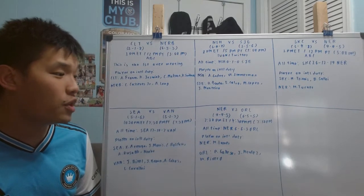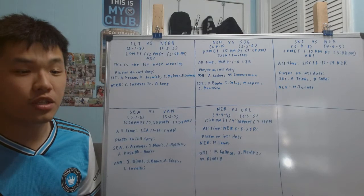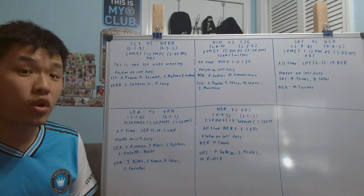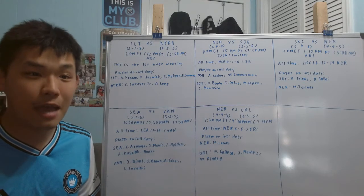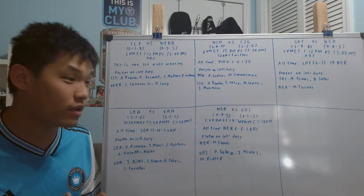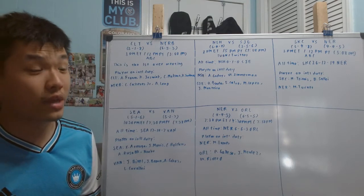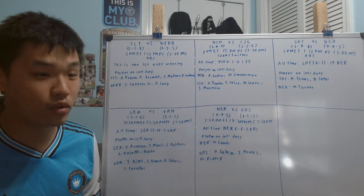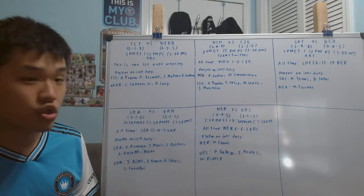Before the U.S. take on Granada in the first Concacaf Nations League, we're going to do a preview of the remaining MLS games happening in the June International Break. Not every single team plays during the June International Break, and we don't get a full slate of MLS action returning until the June 18th weekend and June 19th.